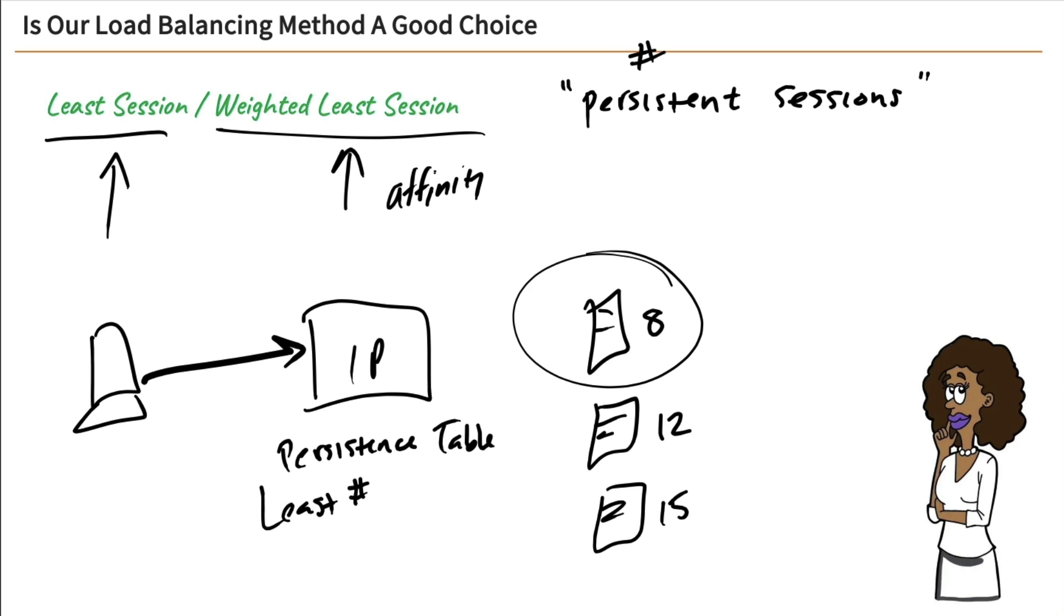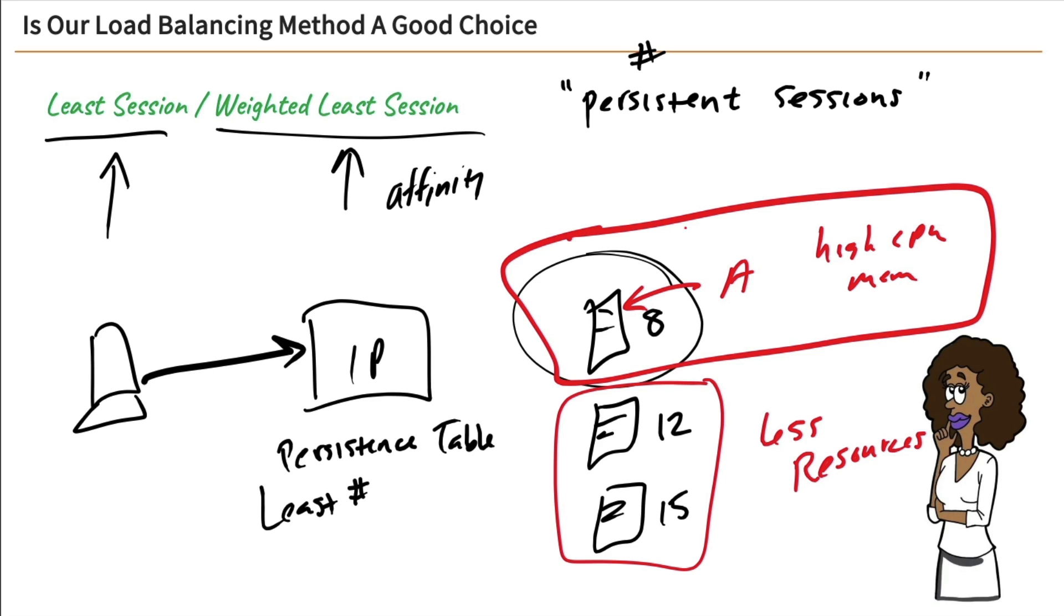And you may want to do this because maybe this server up here, or server A, let's say, it has a lot of CPUs and memory, whereas these two down here have less resources. And so you want to ensure that server A receives more sessions than server B or C down here. So that's our least session and weighted least session.